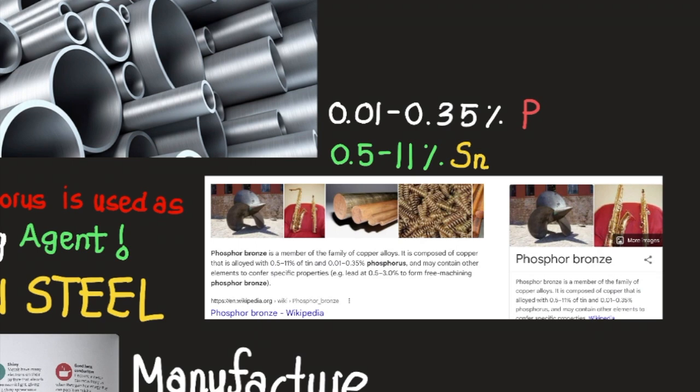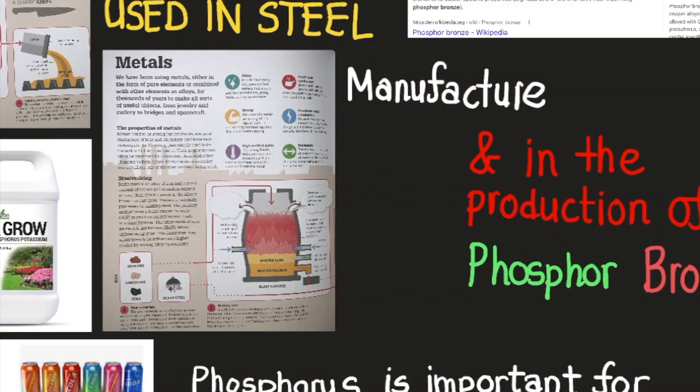So instead of having copper, we have phosphorus with a ratio ranging from 0.01% to 0.35%, and we have tin ranging in the alloy from 0.5% to 11%, effectively changing the overall properties of the material varying by percentage and concentration of each element within the alloy.